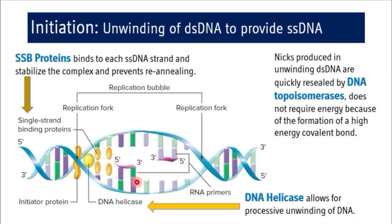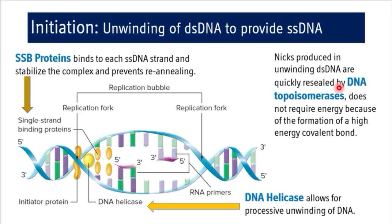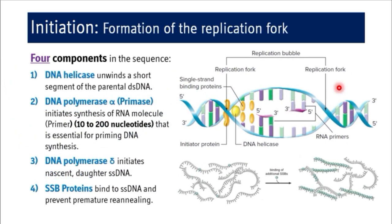After DNA helicase has unwound and separated the DNA, there are chances that the complementary base pairs may re-anneal once helicase has continued along the DNA. Single-strand binding proteins bind to each single-stranded DNA strand, stabilize the complex, and prevent re-annealing. This allows attachment of the RNA primer to the nucleotides. We then come to the next step in the initiation phase: formation of the replication fork.